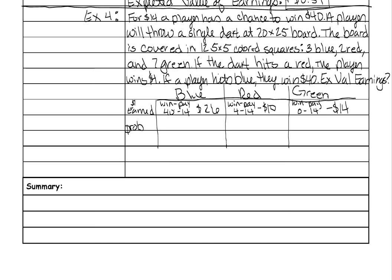Let's set up how much money you earn for each situation. You earn $26 if you get blue, negative $10 if you get red, and negative $14 if you get green because that means you lose. Now what's the probability of each? This is geometric probability, so you use the area. For blue: 3 squares times 5×5 divided by the board area 20×25. For red: 2 squares times 5×5 over 20×25. For the remaining probability we'll do 1 minus the others.